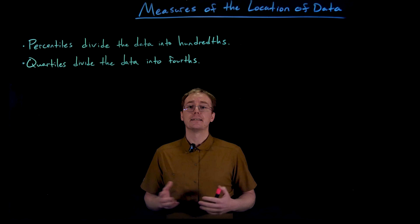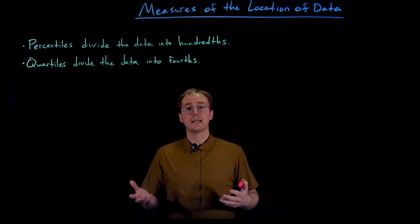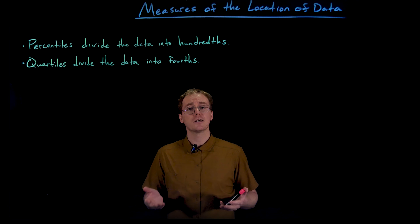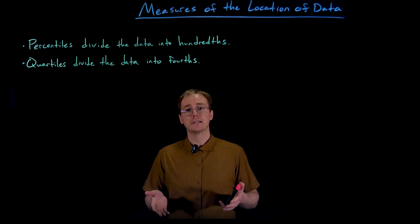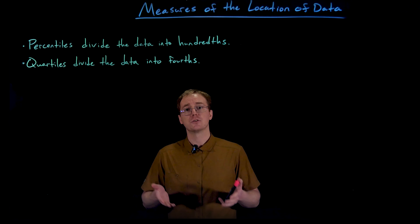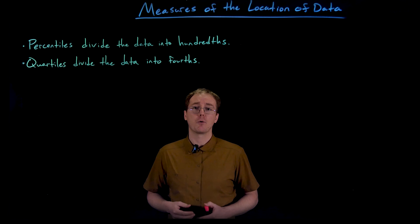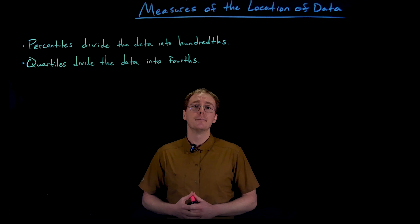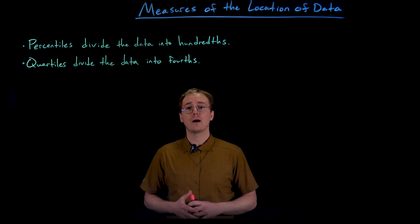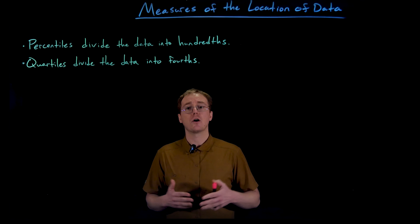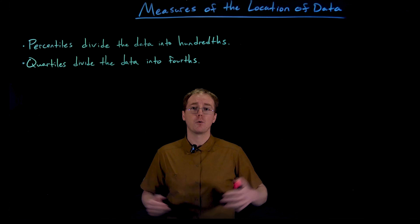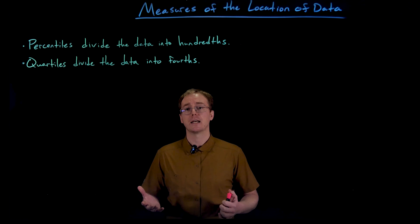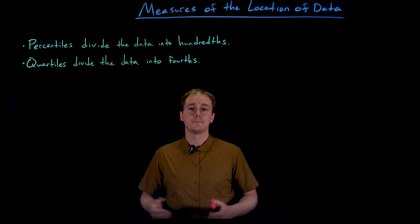Saying a certain value is like the ninth or tenth data point is useful on its own — it does let us know how many data values are below that ninth or tenth point, like eight or nine respectively, but it doesn't let us know how many values are above that point unless we also know the size of the sample or the data set we're working with.